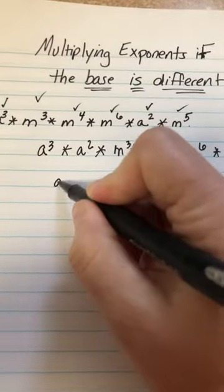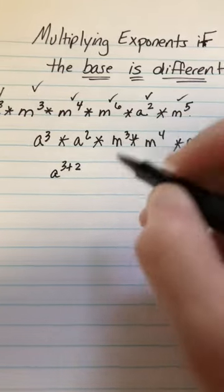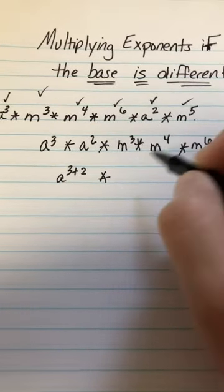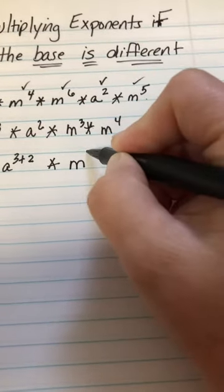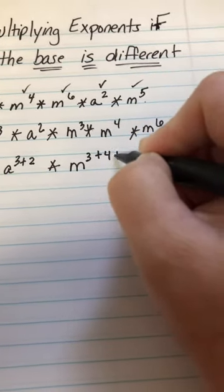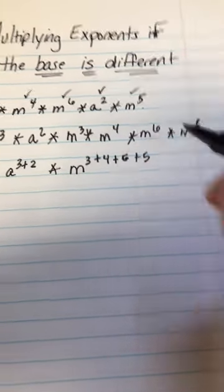So now I'm going to take a 3 plus 2 multiplied by my m's. So m with my exponents added 3 plus 4 plus 6 plus 5.